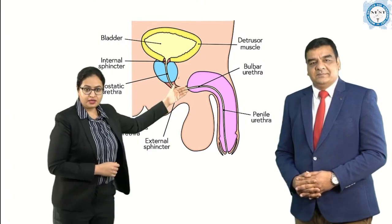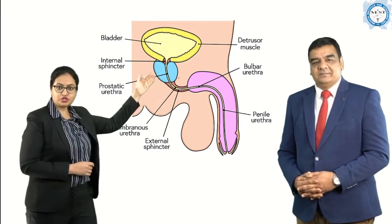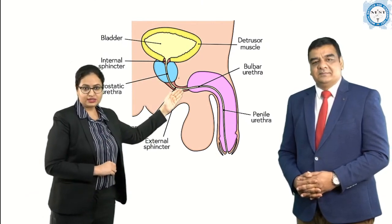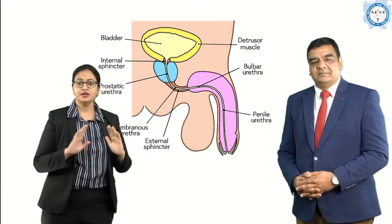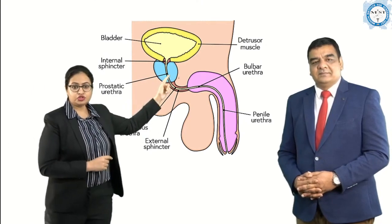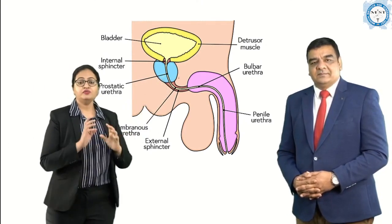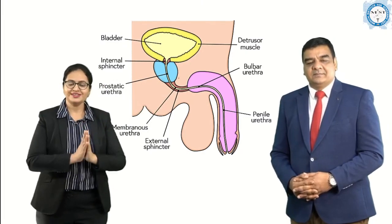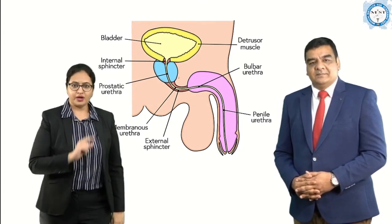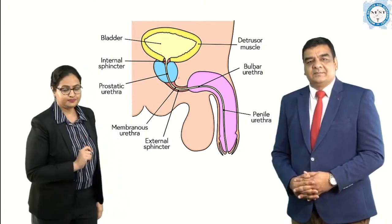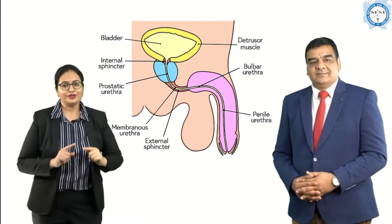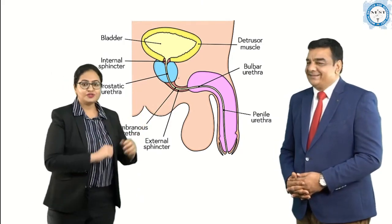Coming to the posterior urethra, we have the membranous portion, which is surrounded by the urogenital diaphragm and its various muscles. Another part is the prostatic urethra, which is the portion within the prostate gland. Gray's Anatomy also mentions one more part — the pre-prostatic urethra — which is present between the bladder and the prostate.